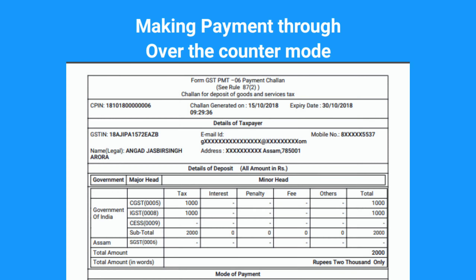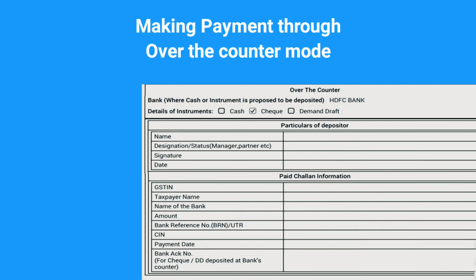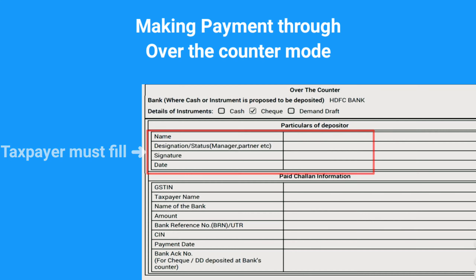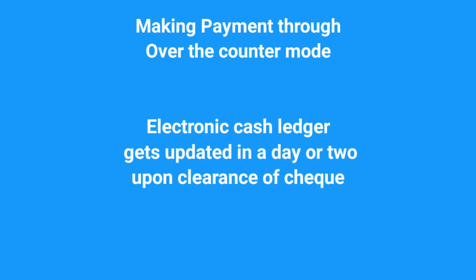Second, for the Over-the-Counter payment mode, fill up the remaining particulars asked on the challan manually with the authorized person's signature and submit it to the bank you earlier chose while generating the challan, along with the cheque, DD, or cash. Within a day or two, your electronic cash ledger gets updated with the payment.